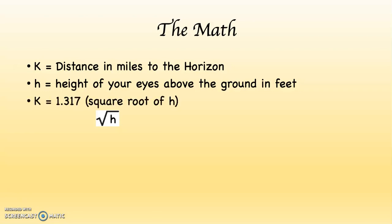And the formula is this: K, which is distance in miles to the horizon, equals 1.317 times the square root of h. So the formula would also look like this: K equals 1.317 times square root of h.